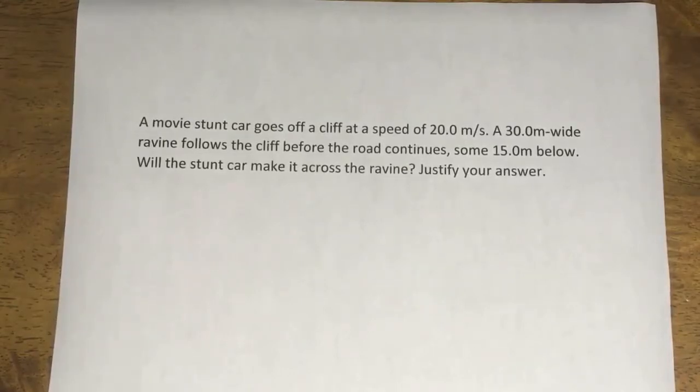A movie stunt car goes off a cliff at a speed of 20 meters per second. A 30 meter wide ravine follows the cliff before the road continues some 15 meters below. Will the stunt car make it across the ravine? Justify your answer.